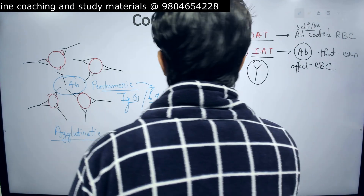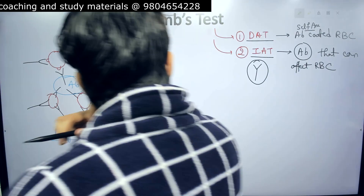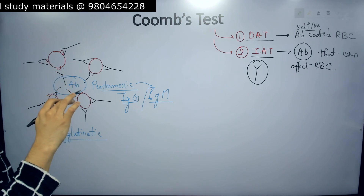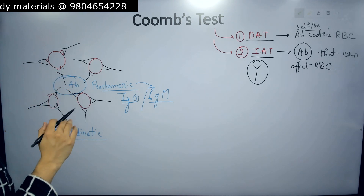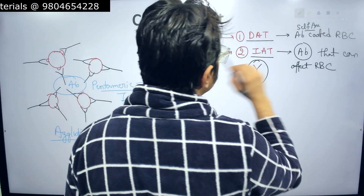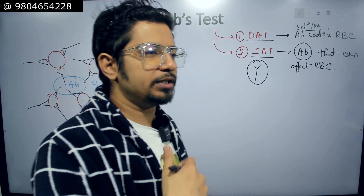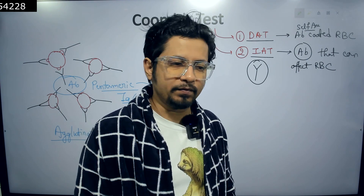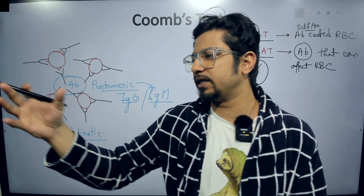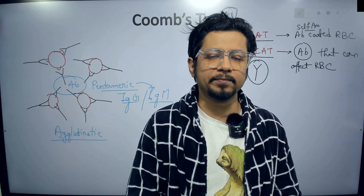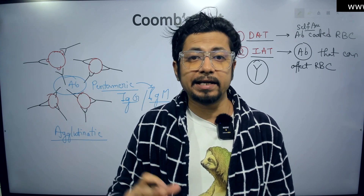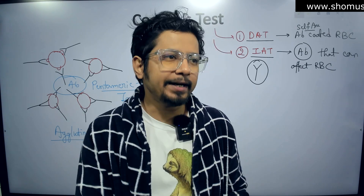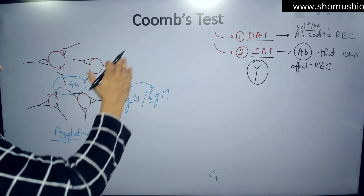To detect antibody-coated RBCs in a mother's body, we use the DAT. The IAT, or indirect Coombs test, is used before blood transfusion or organ transplantation. For example, if an organ is transplanted from person X to person Y, person Y's body may develop antibodies against person X's components, creating immune complications. Erythroblastosis fetalis occurs when mothers develop antibodies targeting the children's RBCs, destroying them. That is why we have these two separate processes.